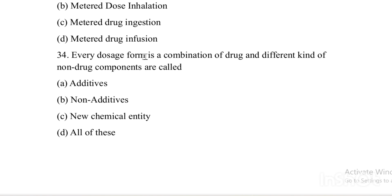Next question. Every dosage form is a combination of drug and different kinds of non-drug components, which are called — Option A: Additives. Option B: Non-additives. Option C: New Chemical Entity. Option D: All of these. Answer is Option A, additives.